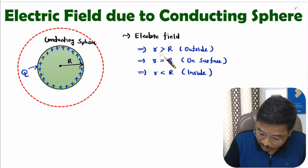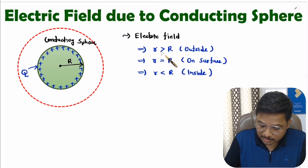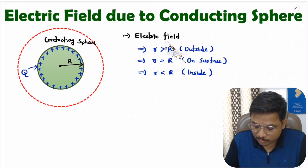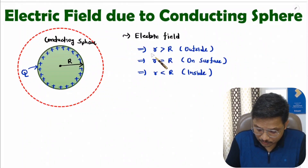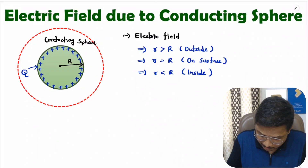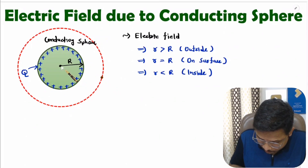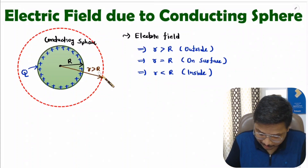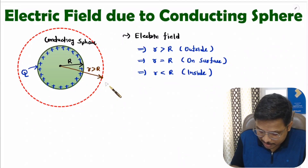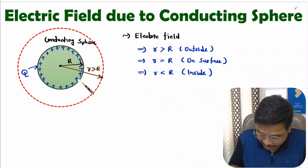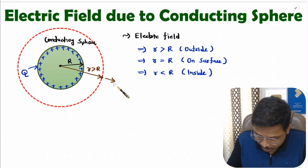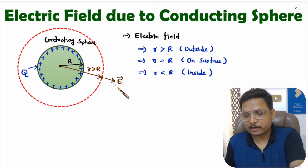Now I will consider the first case: calculation of electric field outside the sphere, where radius small r is greater than capital R. Consider a point where the distance from the center r is greater than capital R. At this point, because of charge Q, the electric field will point in the outward direction.